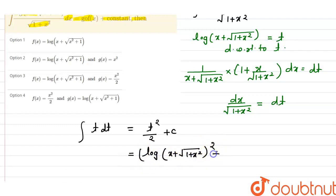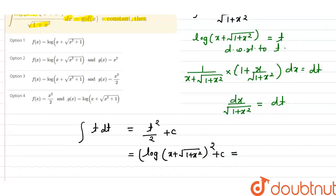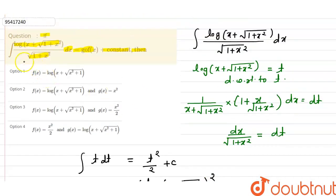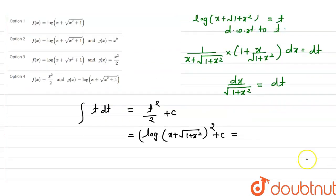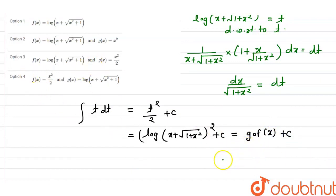So the result is [log(x + √(1+x²))]² / 2 plus c. In the question, the left-hand side is given as g(f(x)) plus c. So this expression equals g(f(x)) plus c, and we have to find the values of f(x) and g(x).